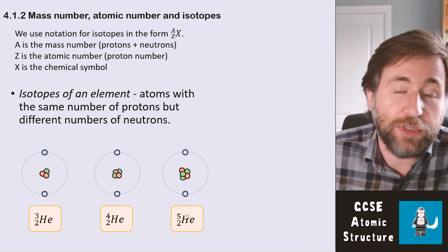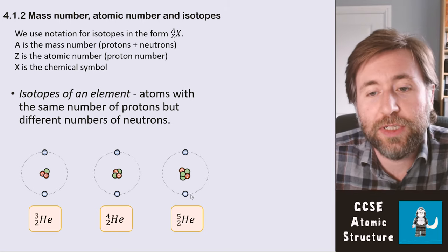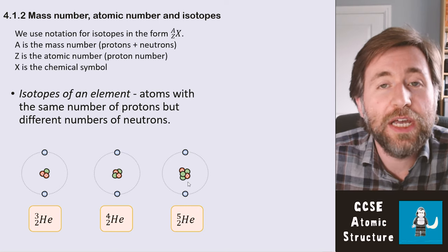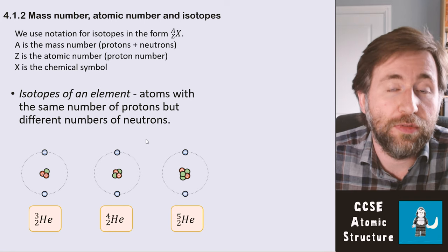This last one is what you call helium-5. This has five total protons plus neutrons. It's helium because it's got two protons, but it has three neutrons. So these are three isotopes of the same element.